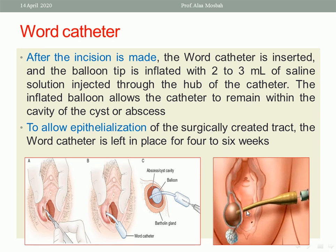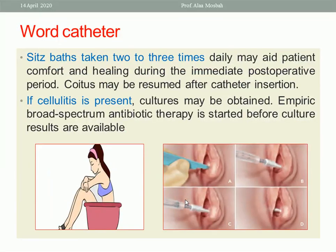Regarding the Word catheter: after the incision is made, the Word catheter is inserted and the balloon tip is inflated with 2 to 3 mL of saline solution injected through the hub of the catheter to keep it in place. To allow epithelialization of the surgically created tract, the Word catheter is left in place for four to six weeks. Sitz baths two to three times daily may aid patient comfort and healing during the immediate postoperative period. Coitus may be resumed after catheter insertion.